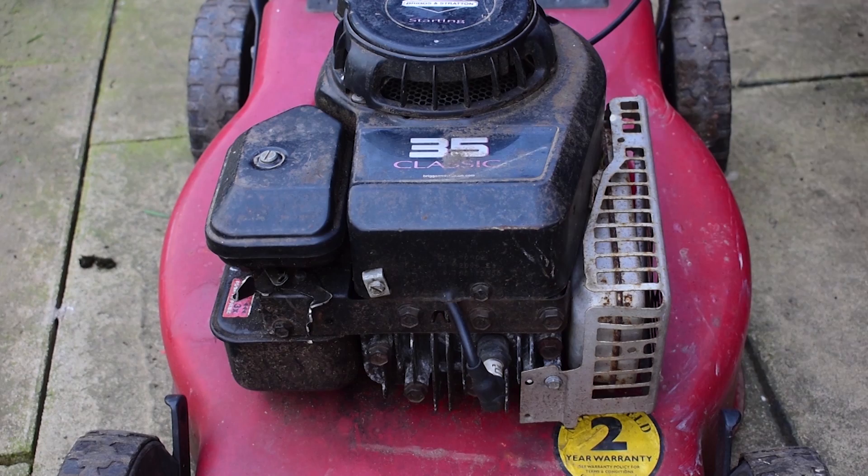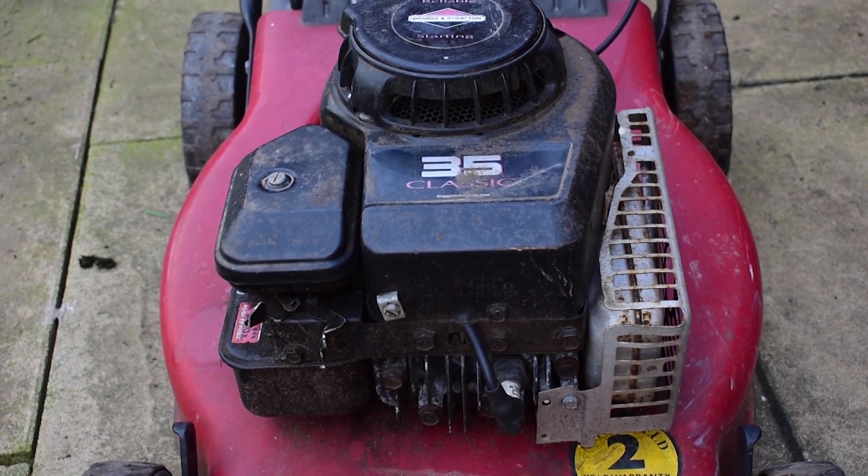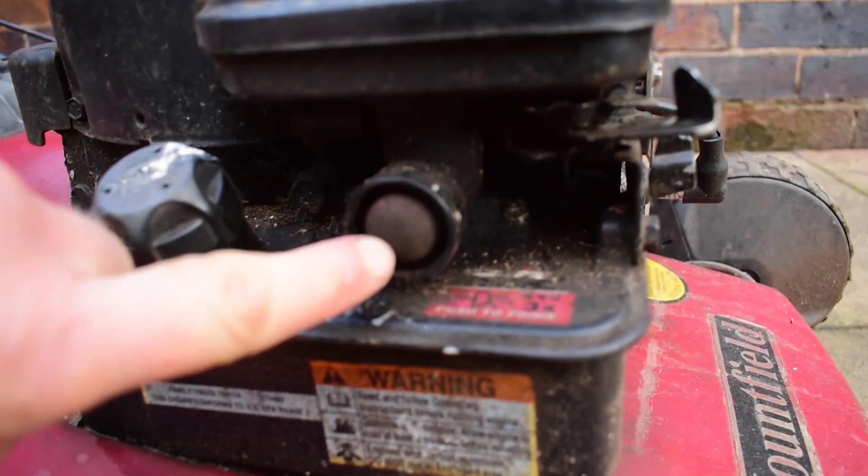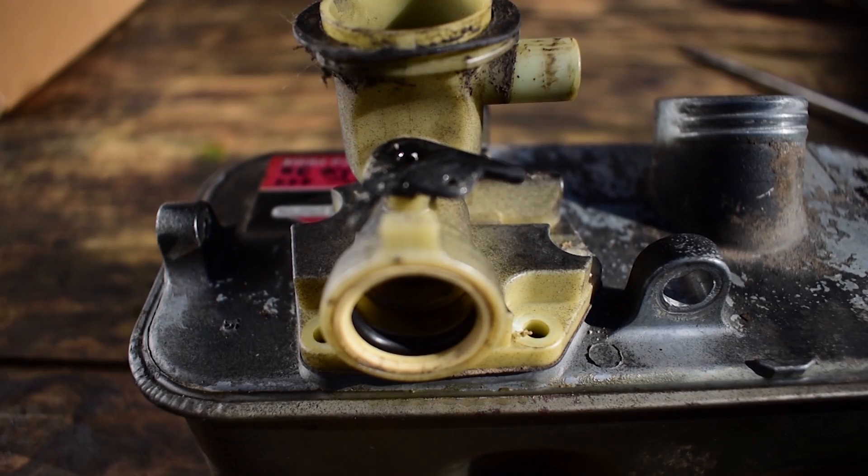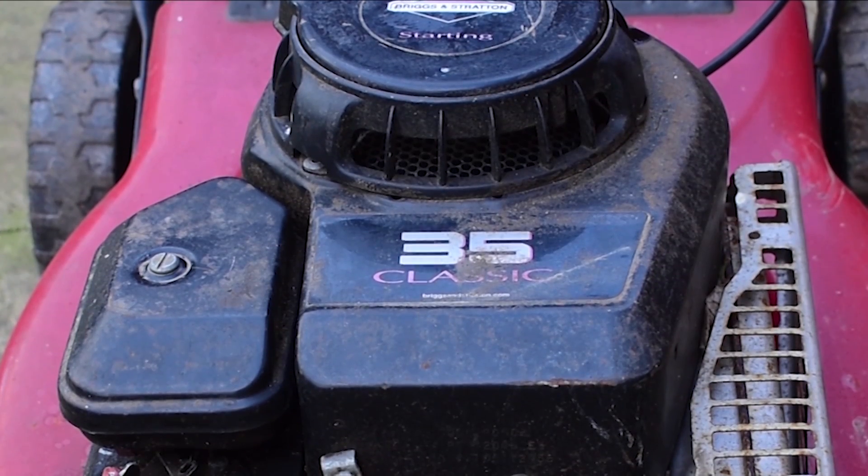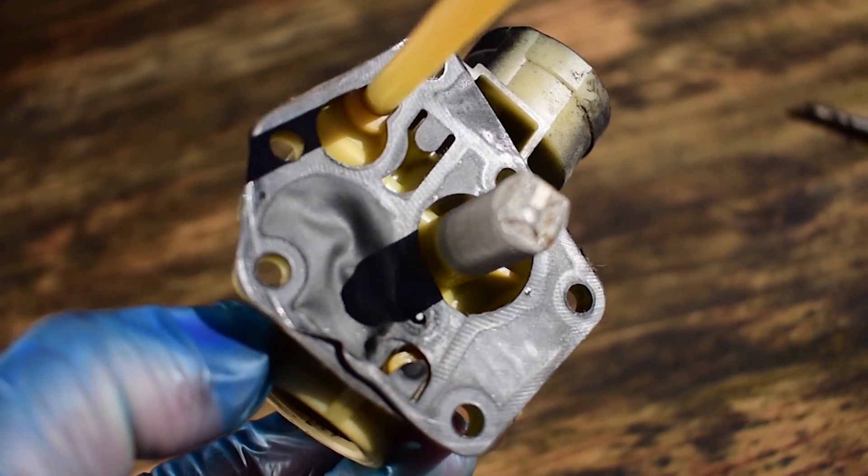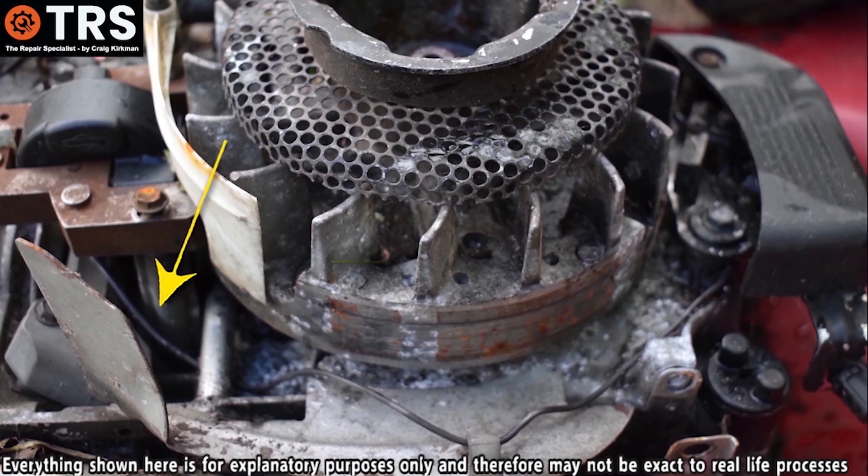This applies to the Classic, Sprint, Quattro style lawnmowers like this one here with the primer bulb where the carburetor is adjoined to the fuel tank. A lot of them are labeled Classic 35 like this one. It's actually the type that's famous for the diaphragm issues.